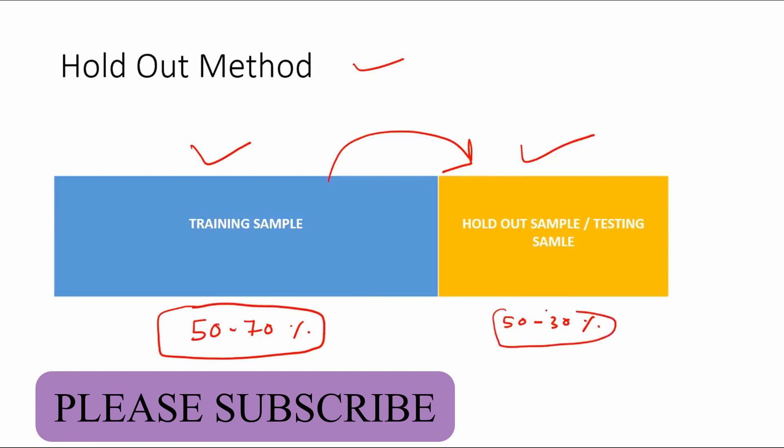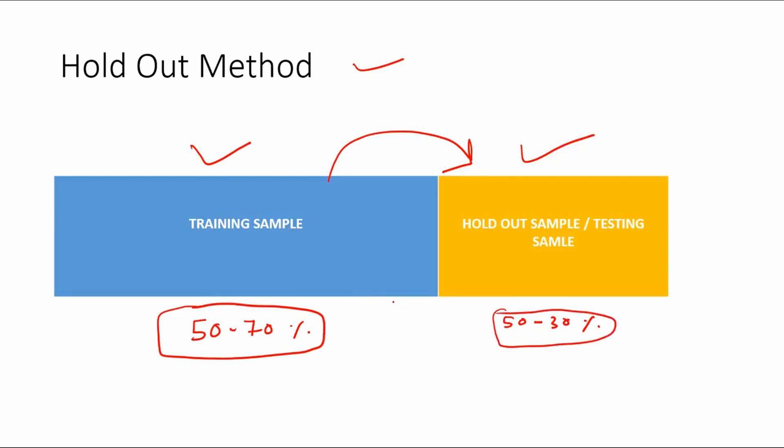So normally we go ahead with 50 to 70 percent of the data in the training sample and 30 to 50 percent as the holdout sample. Although these numbers are not - there is no thumb rule as such - but normally the industry practice is to take 50 to 70 or 80 percent as training sample and 20 to 50 percent as the holdout sample.